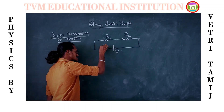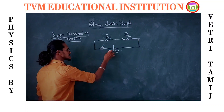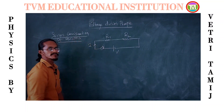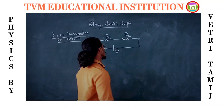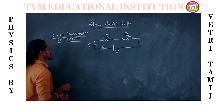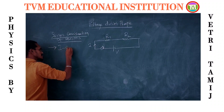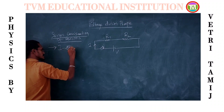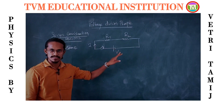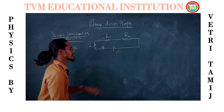Once the key is connected, current I will flow. The current in the circuit is assumed to be the same or constant throughout. In a series circuit, the current does not change — the current at each resistor level is the same.